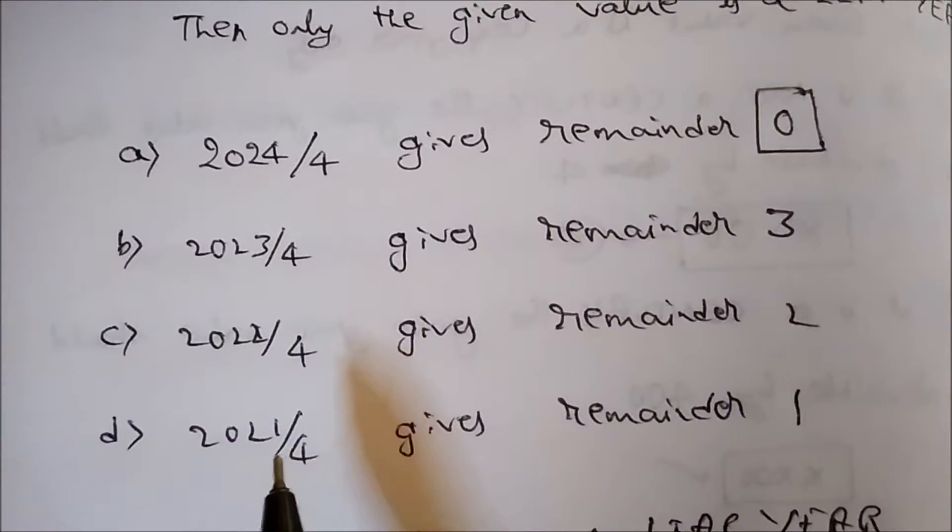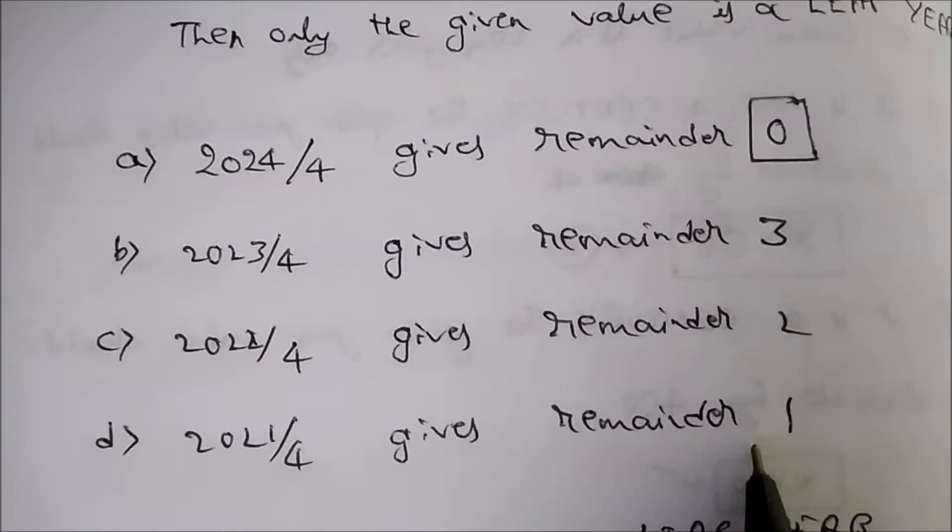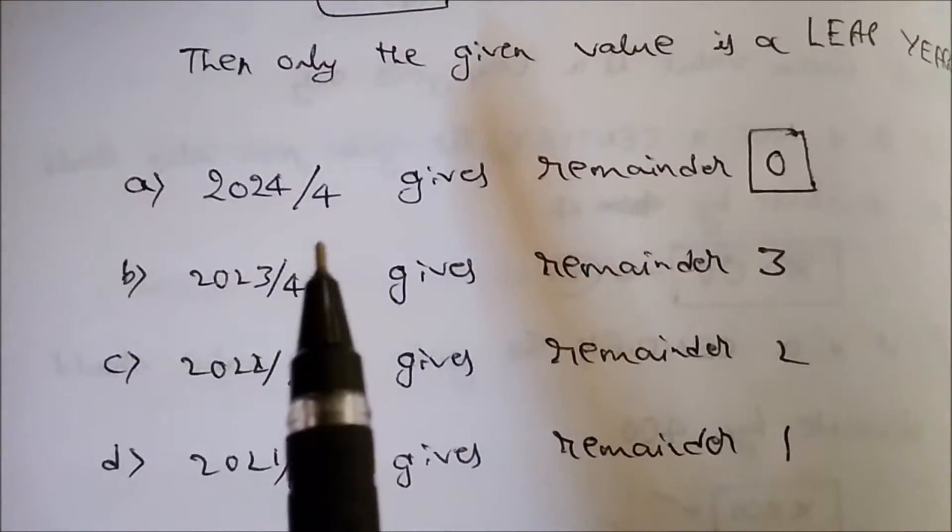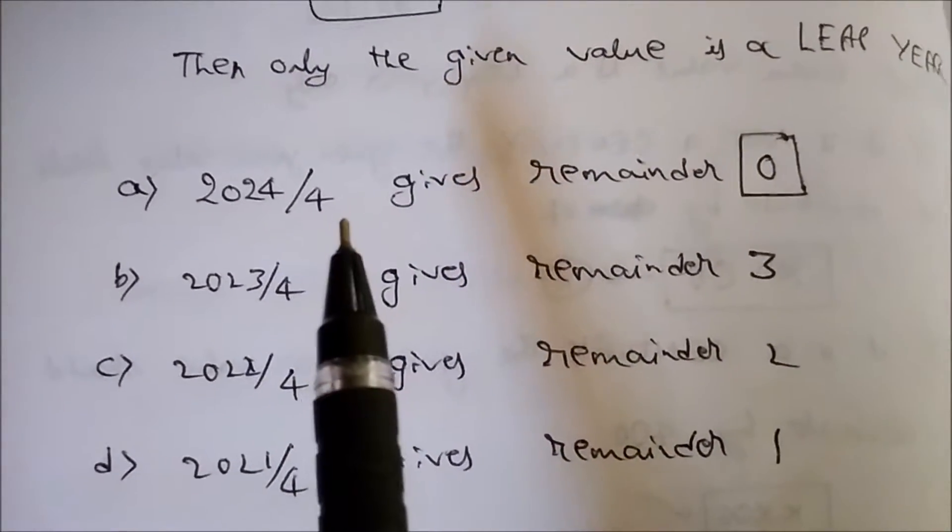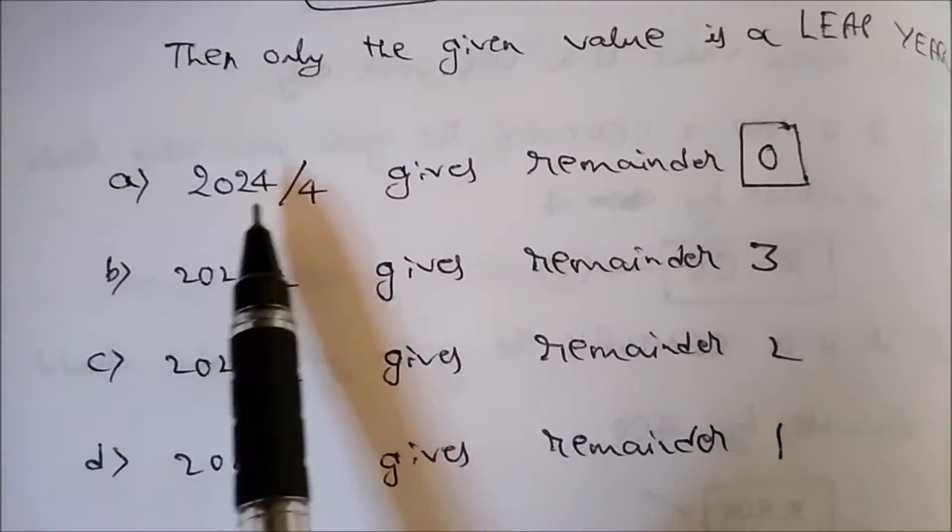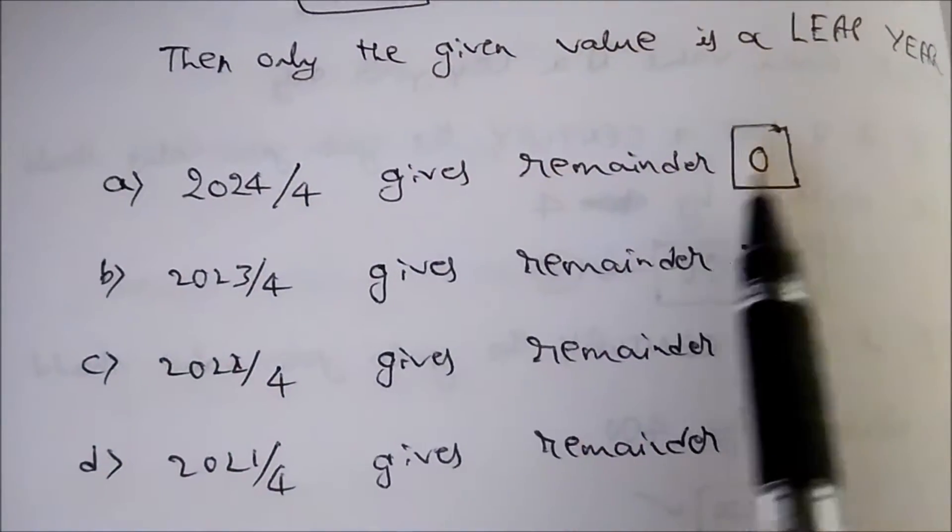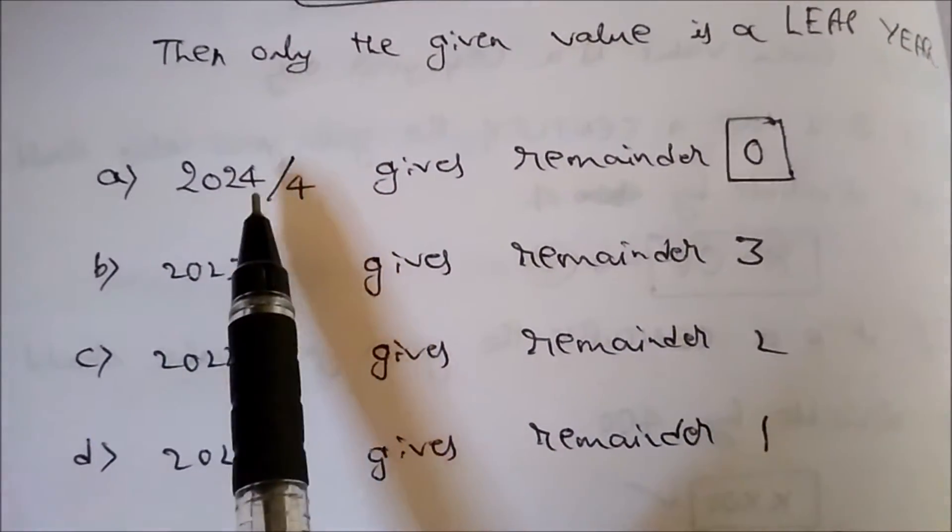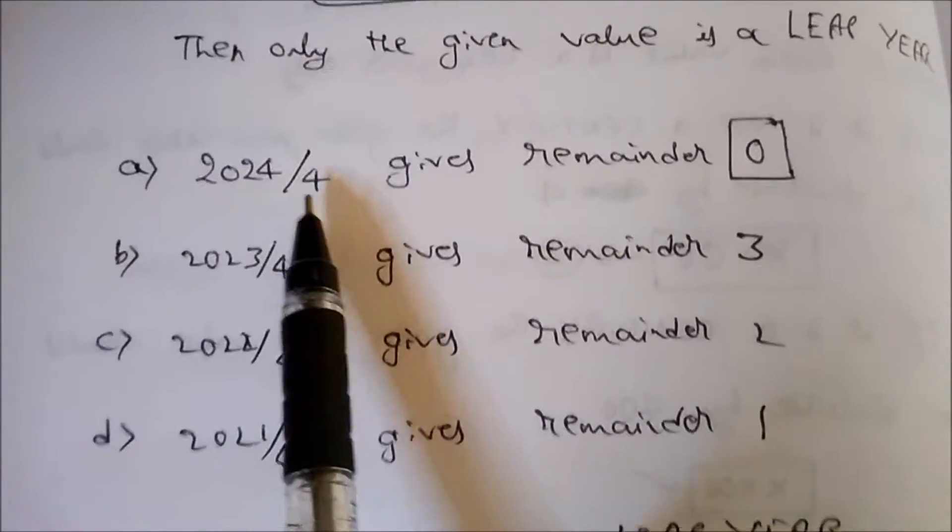2021 divided by 4 gives remainder 1. If a number is divisible by any given value, then it gives a remainder 0. Hence 2024 divided by 4 gives remainder 0, hence it is exactly divisible by 4, hence 2024 is a leap year.